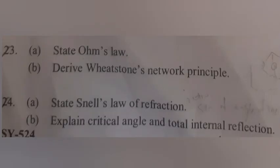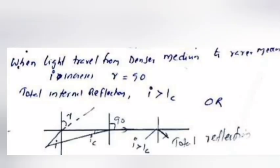Question 24B: Explain critical angle and total internal reflection. Answer: When light travels from denser medium to rarer medium, angle i increases. When r equals 90 degrees, total internal reflection occurs when i is greater than iₒ.